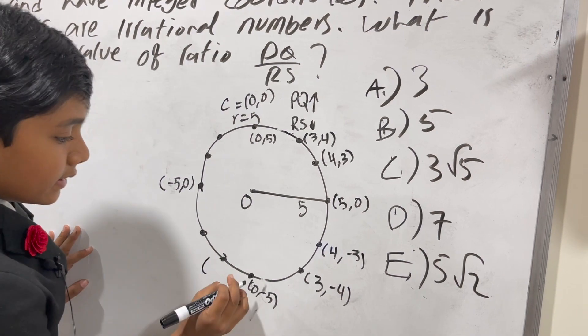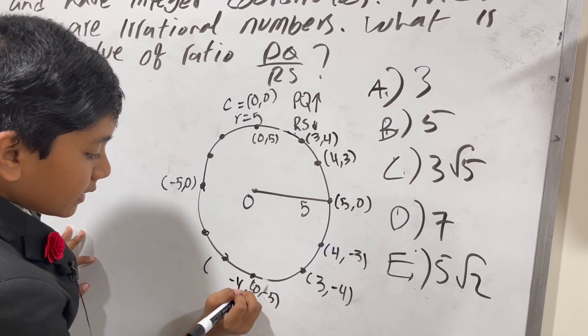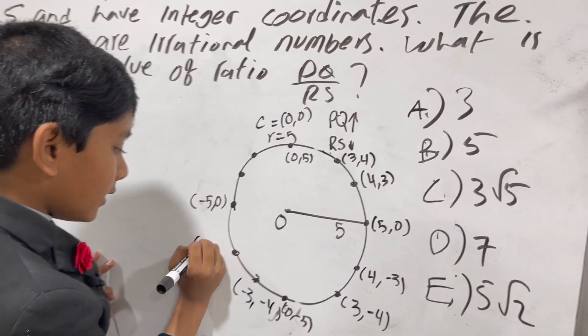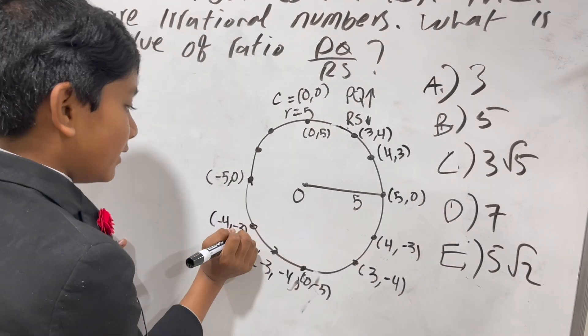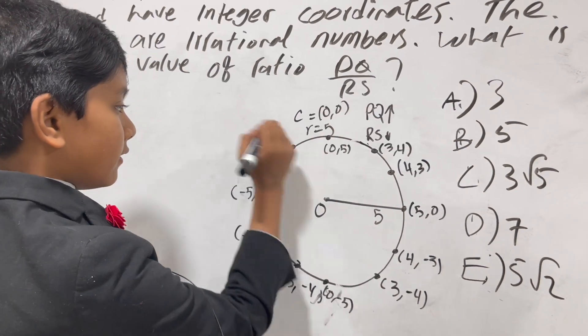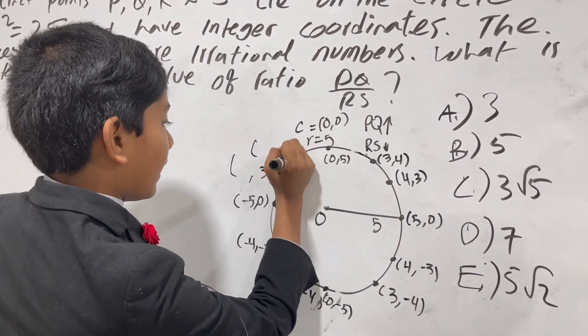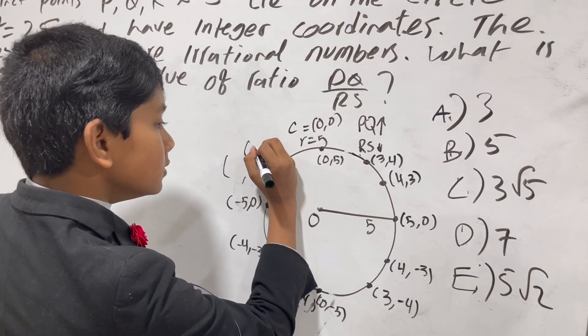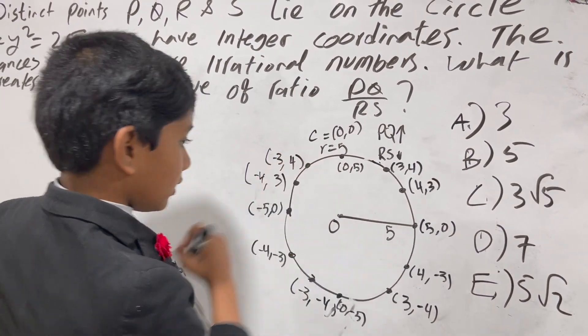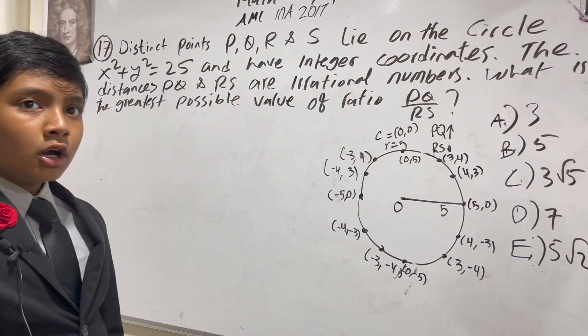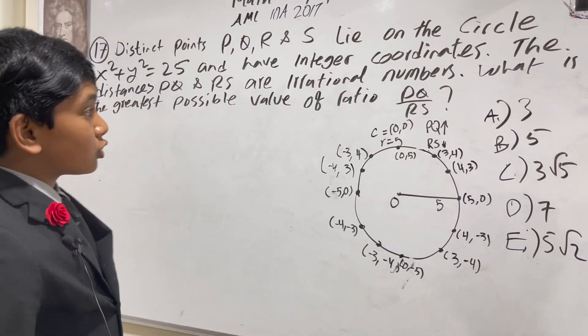And then this would be (-4,-3), and then (-3,-4). And finally, these ones would happen to be (-3,4) and (-4,3). Alright, so we've noted all 12 points on this circle with integer coordinates.